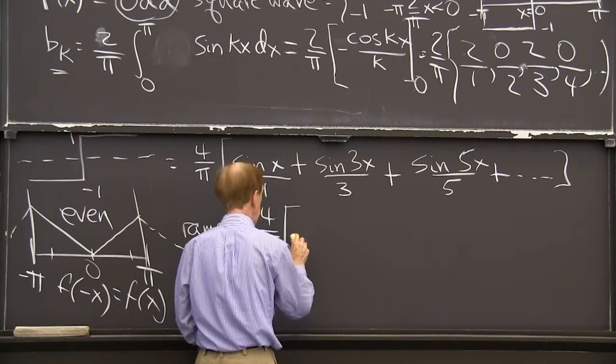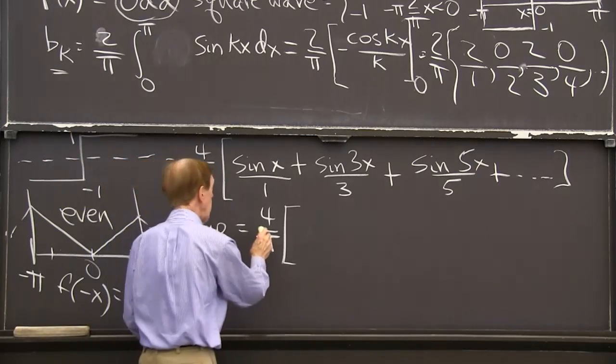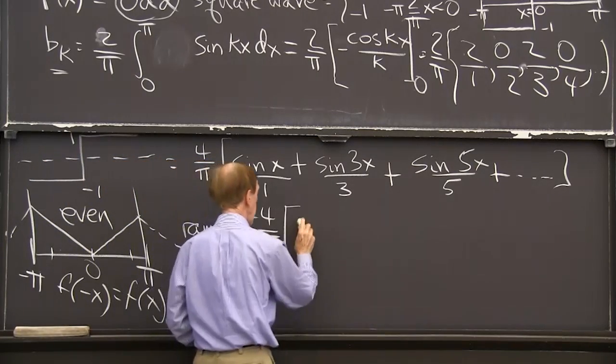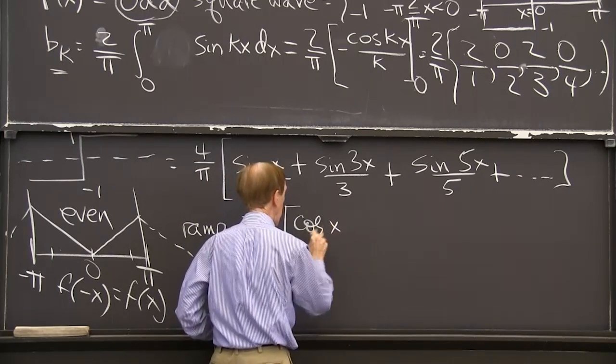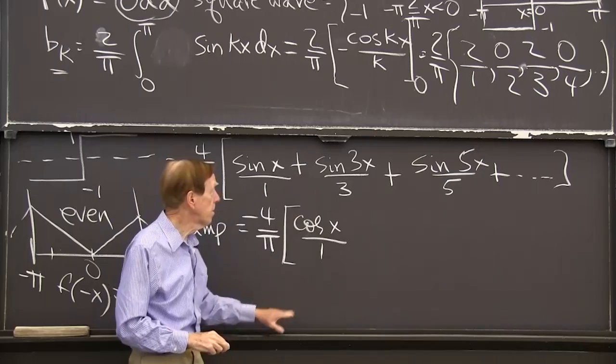So I'll have the integral of, so the integral of sine x will be minus, is the integral of sine x is minus cosine x. So I'll put the minus there. Cosine x over 1, I guess.